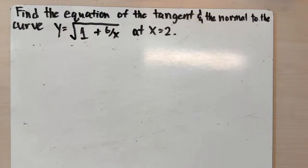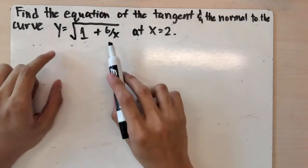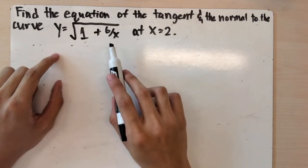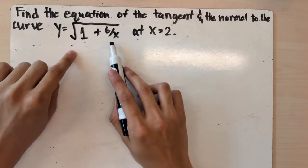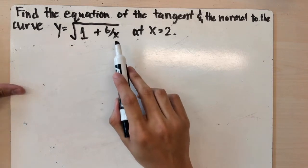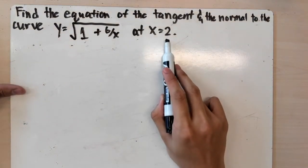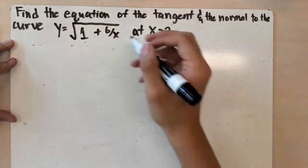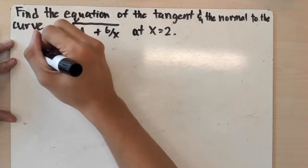Now we'll tackle an exam-style question. The question states: find the equation of the tangent and the normal to the curve y equals the square root of (1 plus 6 over x) at x equals 2. Pause the video and try it yourself. The key is to get the derivative of this function, because the derivative gives the gradient of the original curve at any point, and we want the gradient at x equals 2.